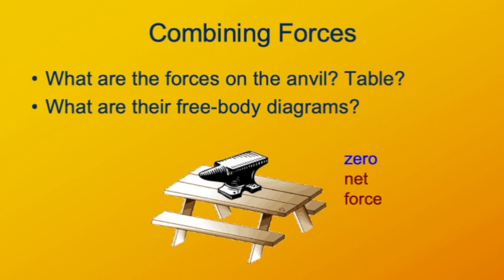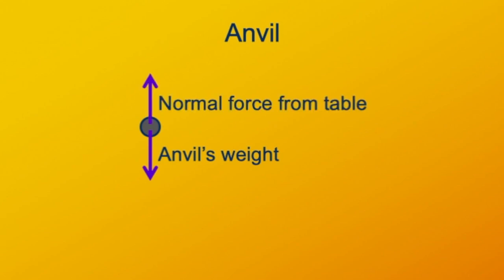Can we draw free body diagrams for the anvil and for the table? Let's go ahead and do that. First, the anvil. This doesn't look like an anvil. It's just a circle. That's fine. We're just representing here as its center of mass. There are two significant forces acting on it. One is its weight acting downward, exerted by the earth through its gravitational field. And the other is the normal force upward from the table, which keeps the anvil from falling down. The net force on the anvil is zero. The normal force from the table is exactly opposite in direction and equal in magnitude to the pull from the earth downward on the anvil.